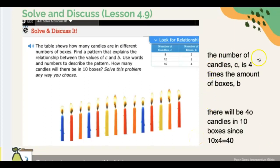Here's an answer from Helena. The number of candles c is four times the number of boxes which is b. Therefore there will be 40 candles in 10 boxes, or 10 times 4 equals 40.